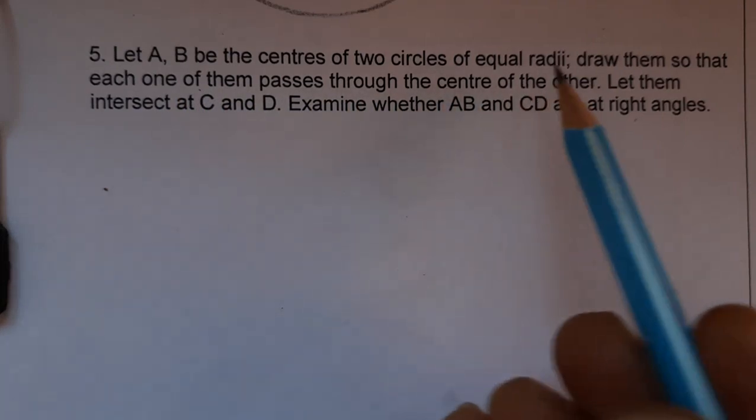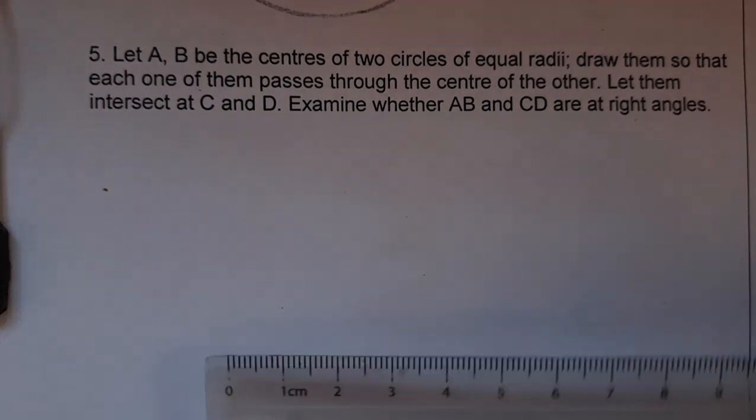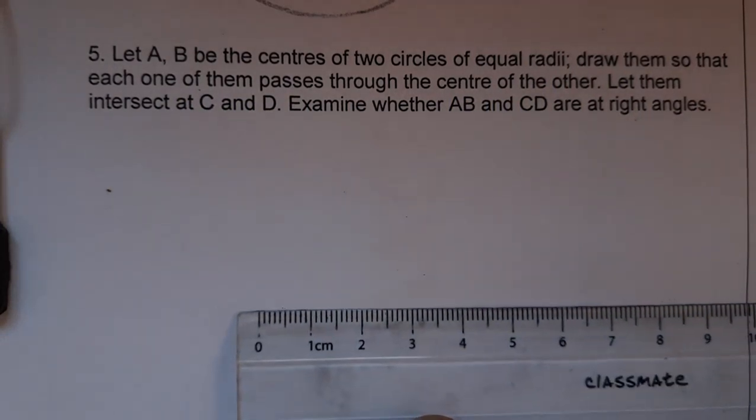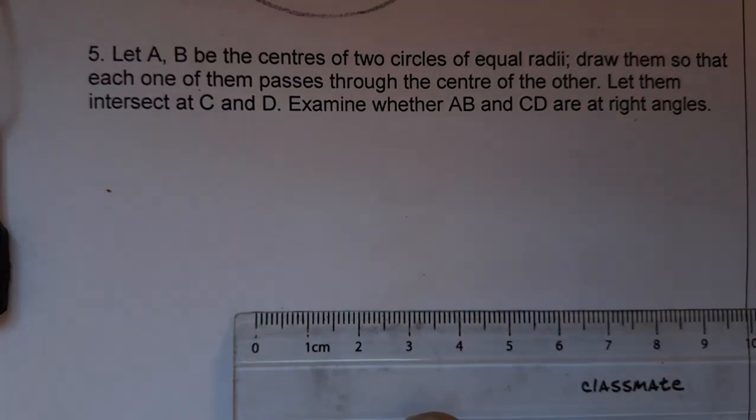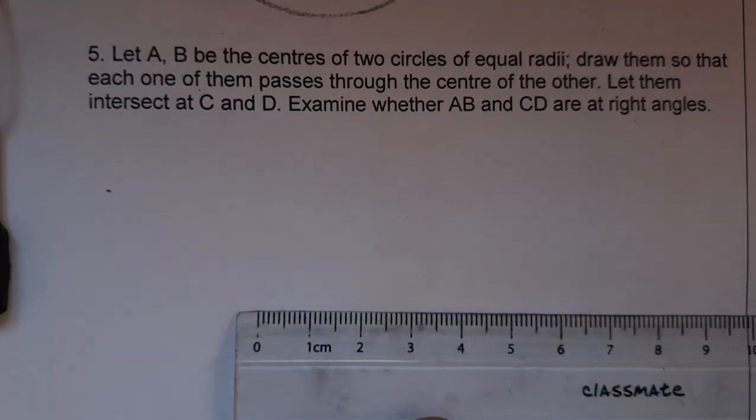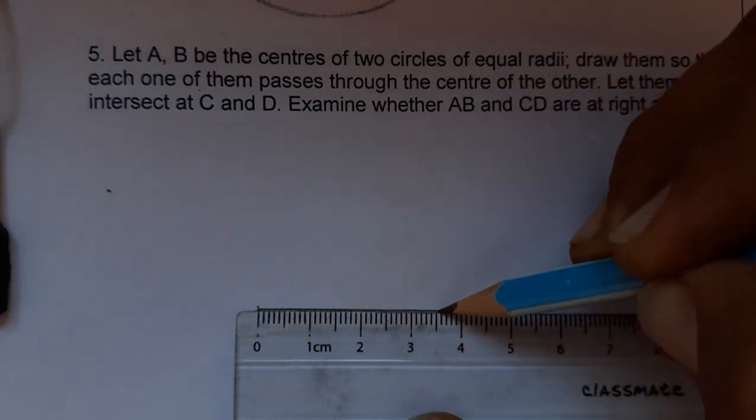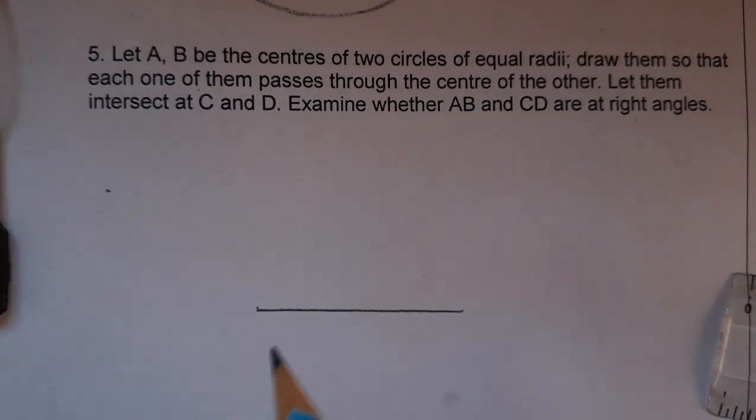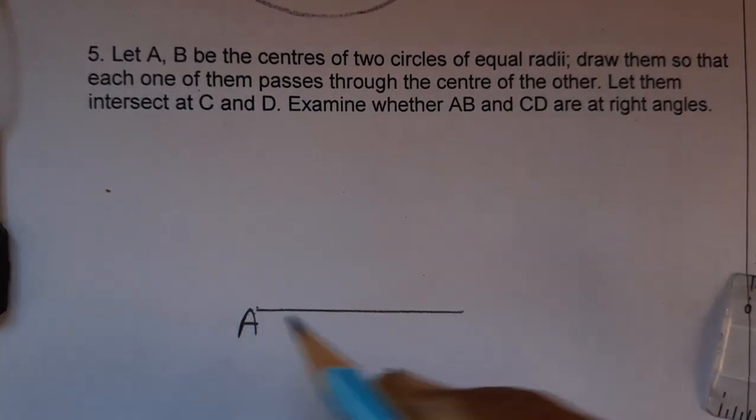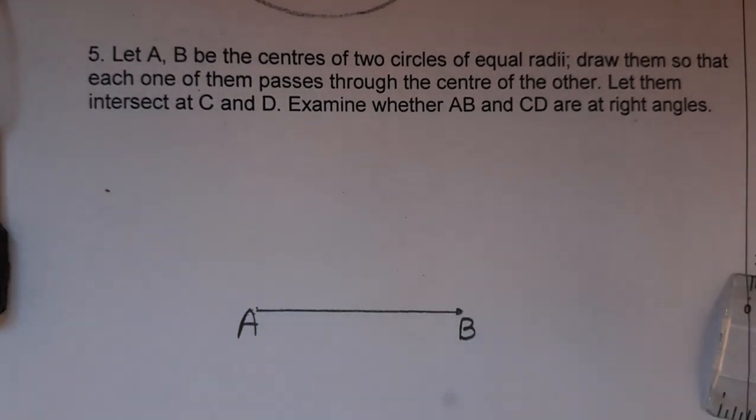So let's draw 4 cm. First we'll make a line. 4 cm we have drawn. And this we mark as A and this we mark as B.